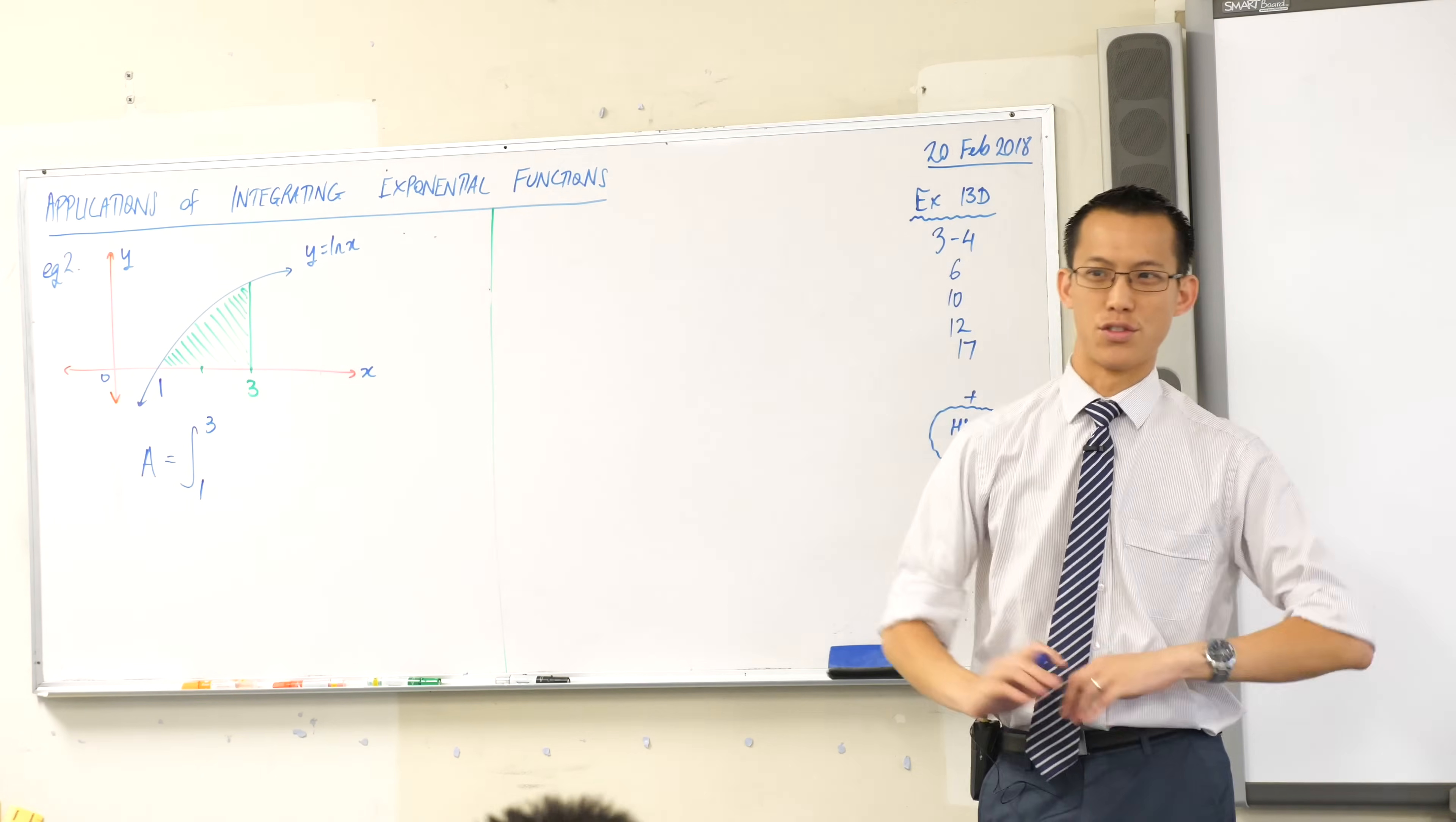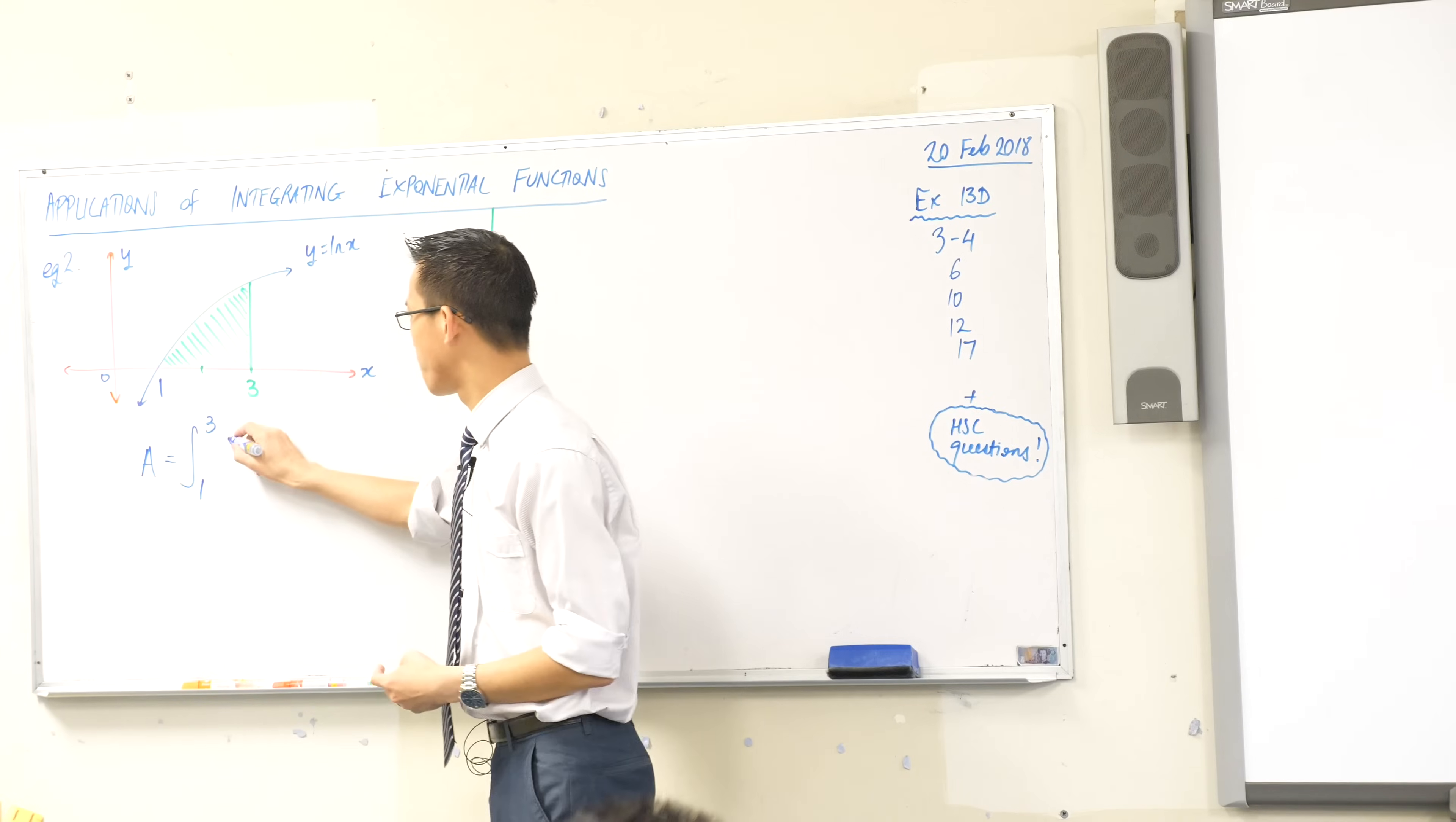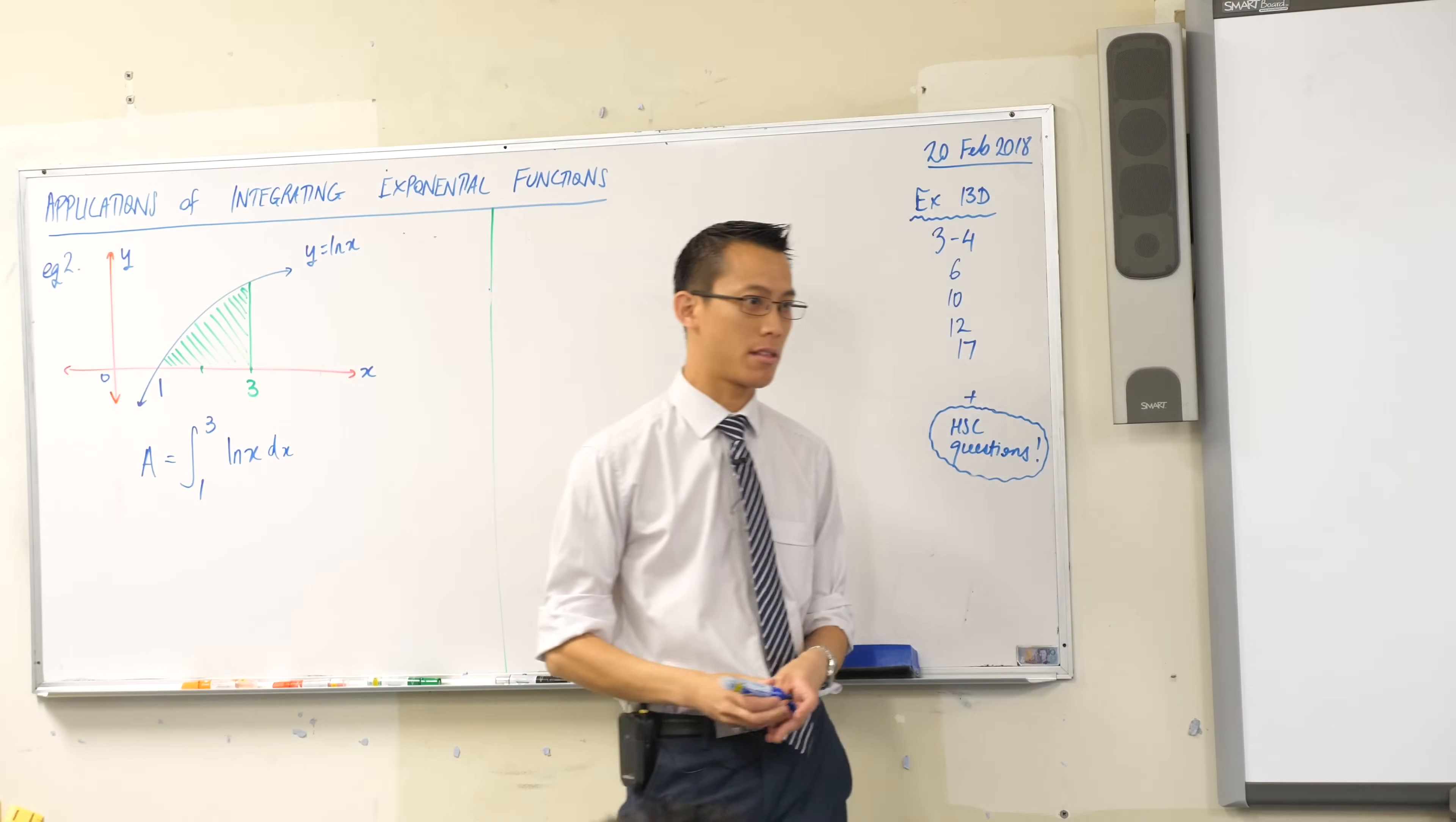It's just an area under the curve so no pi's involved or anything like that, no rotation. What will come next? What's the integrand? It's just log x, that's all you're integrating, and it's with respect to x because it's beneath the curve.